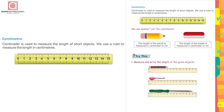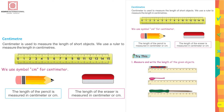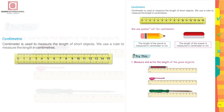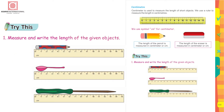Try this: measure and write the length of the given objects. We use a ruler to measure length in centimeters, using the symbol CM. The length of the pencil is measured in centimeters, and the length of the eraser is also measured in centimeters.